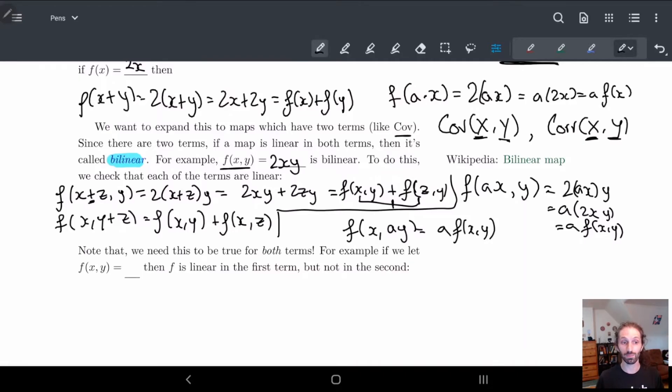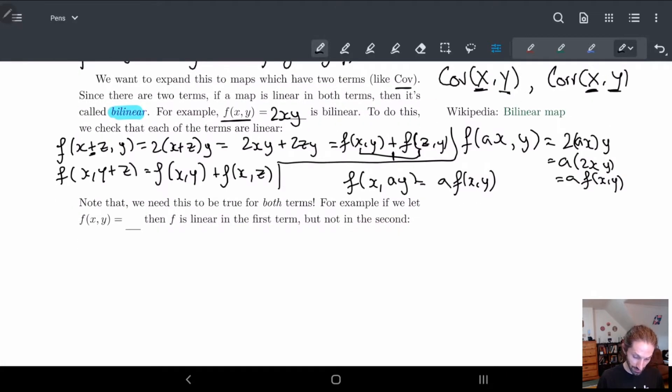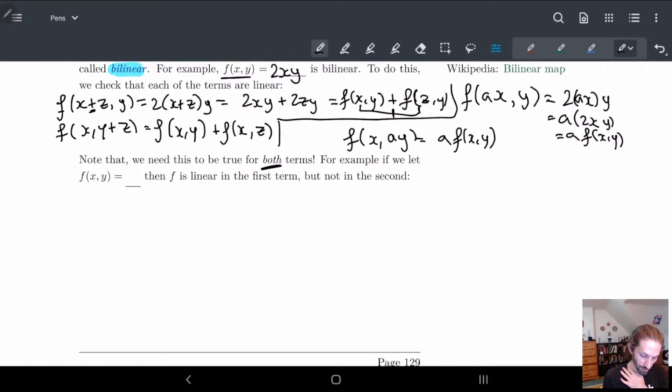Now not everything is bilinear right. So this needs to be true for both terms. But let's look at an example where this is not true for both terms but it's true for maybe one of them. So let me define a map f of x y. And in this case I'm going to look at division x divided by y. And in this case f is linear in the first term but not in the second. And let's see.